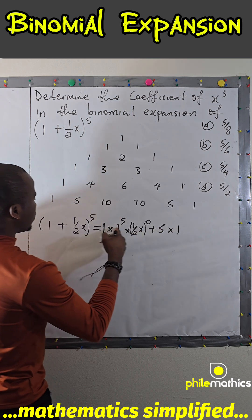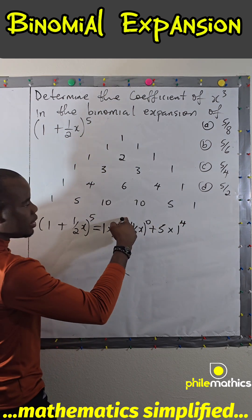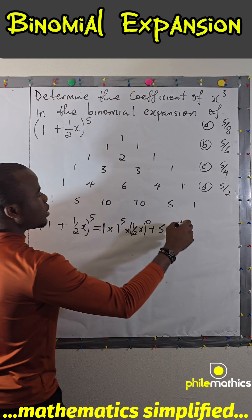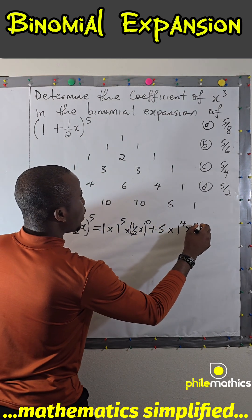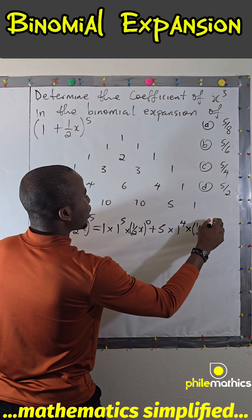This is decreasing while this is increasing, times (1/(2x)) to the power 1.